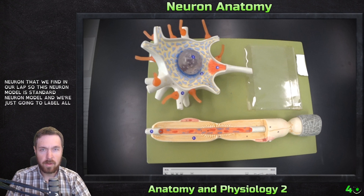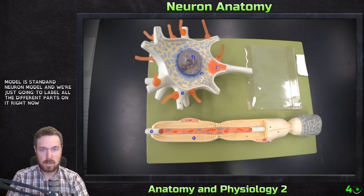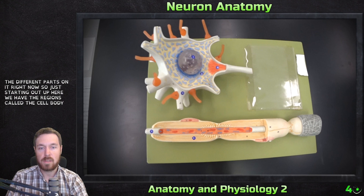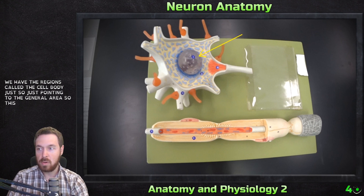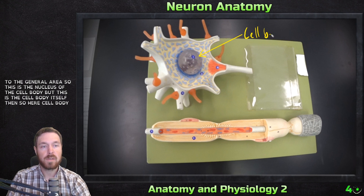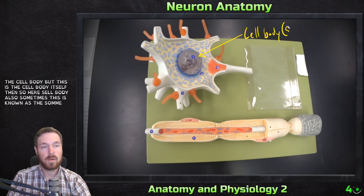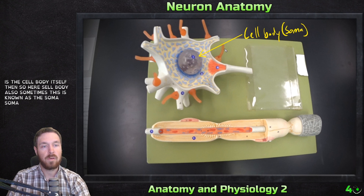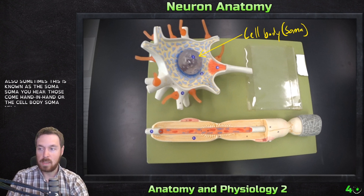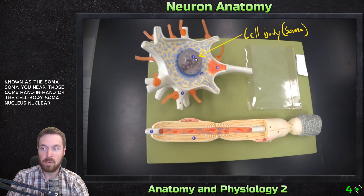Starting up here, we have the region called the cell body — just pointing to the general area. This is the nucleus of the cell body, but this is the cell body itself. The cell body is also sometimes known as the soma — S-O-M-A. You hear those terms used together: cell body, soma, nucleus, nuclear envelope — that's where the DNA is.